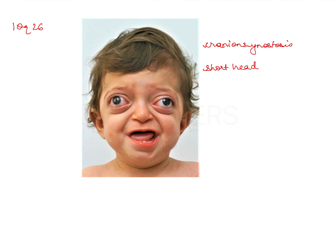And there is scaphocephaly, that is a boat-shaped head. Or there could be trigonocephaly, that is a triangle-shaped head. Now, talking of shapes of the head, there is a specific feature known as cloverleaf skull.